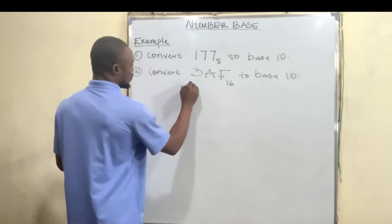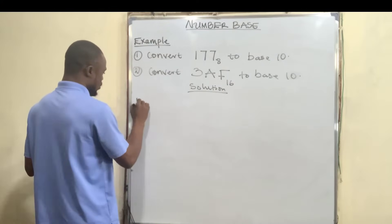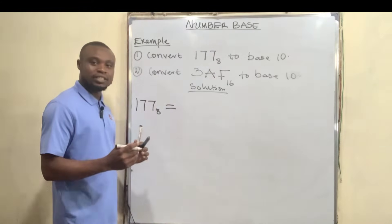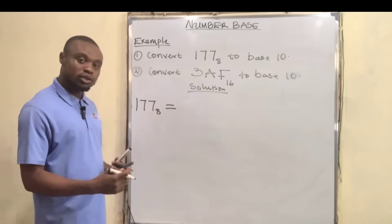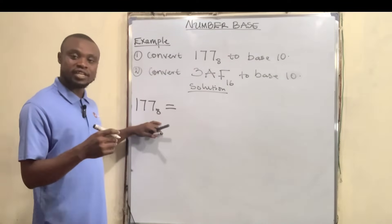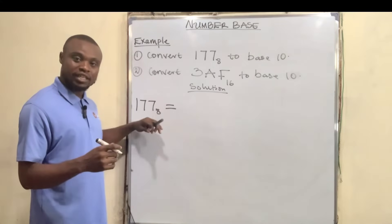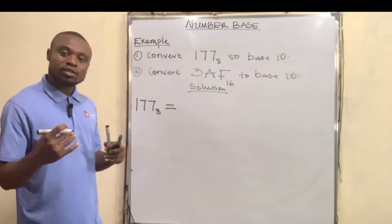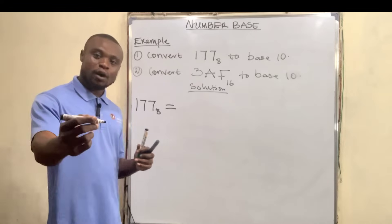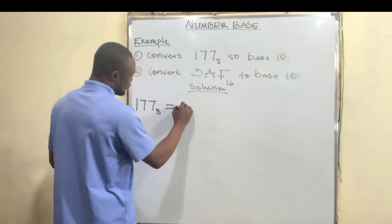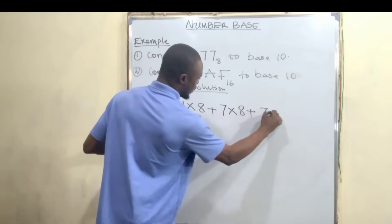Let's start with the first question. We have 177 base 8. Now in converting this number, which is in base 8, we have to convert it to base 10. In doing this, we are going to multiply the individual numbers with the base: that is 1 multiplied by 8, then 7 multiplied by 8, and another 7 multiplied by 8. We also write powers for each of the bases from the least to the highest, so we have: 1 multiplied by 8, plus 7 multiplied by 8, plus another 7 multiplied by 8.